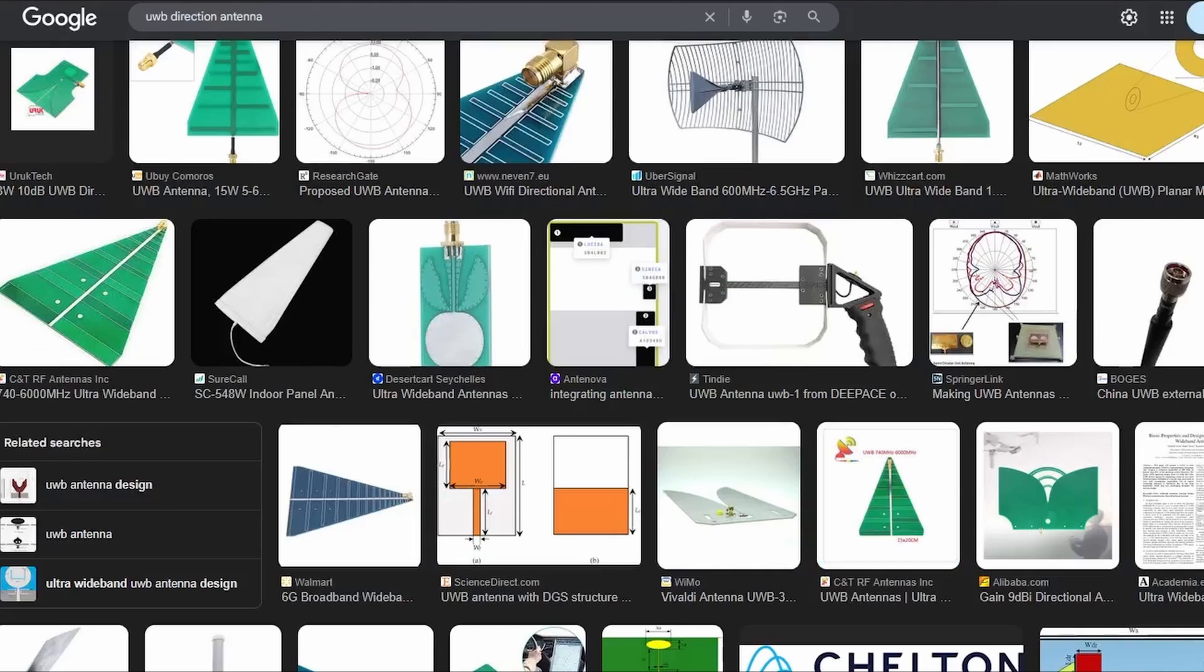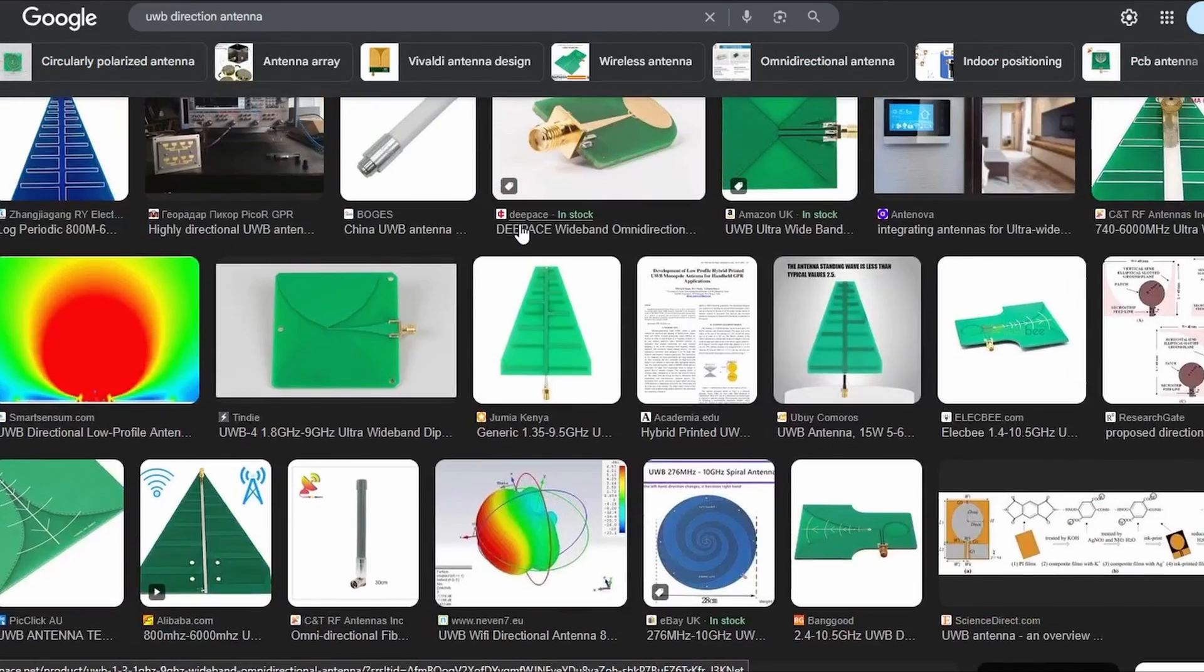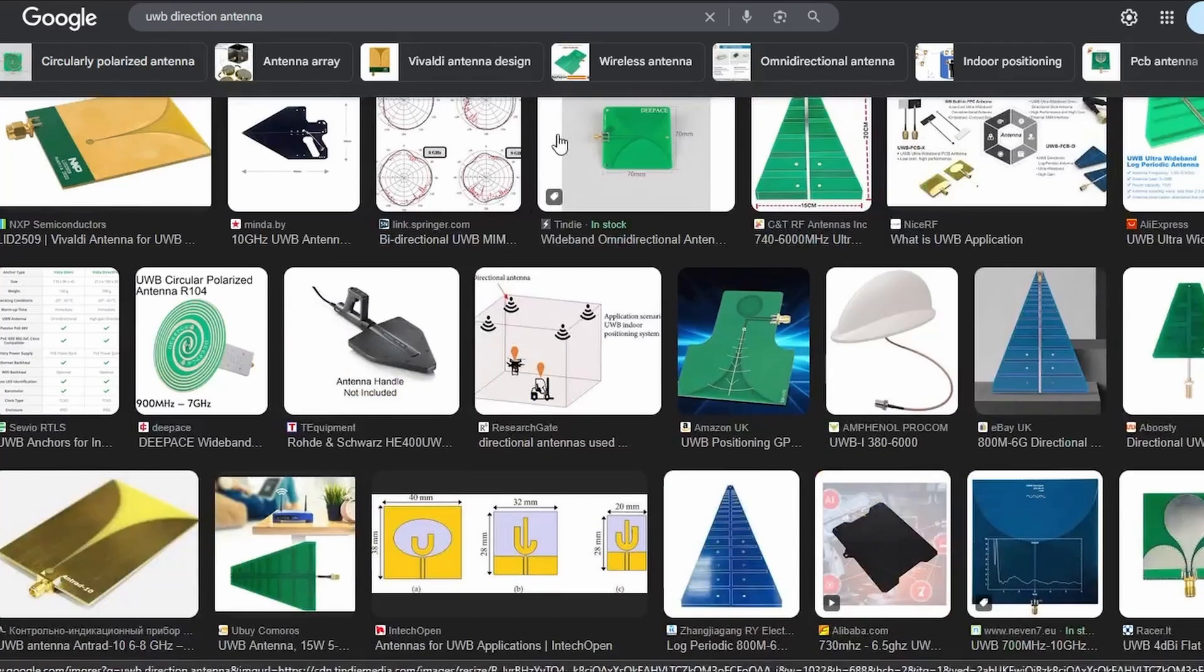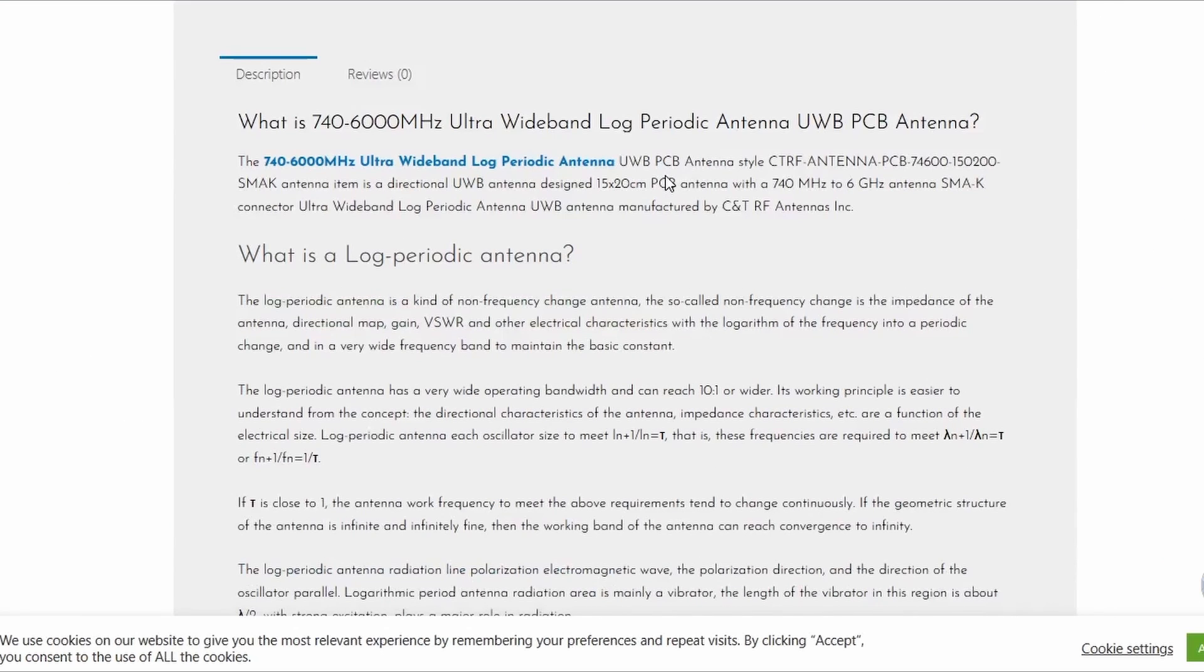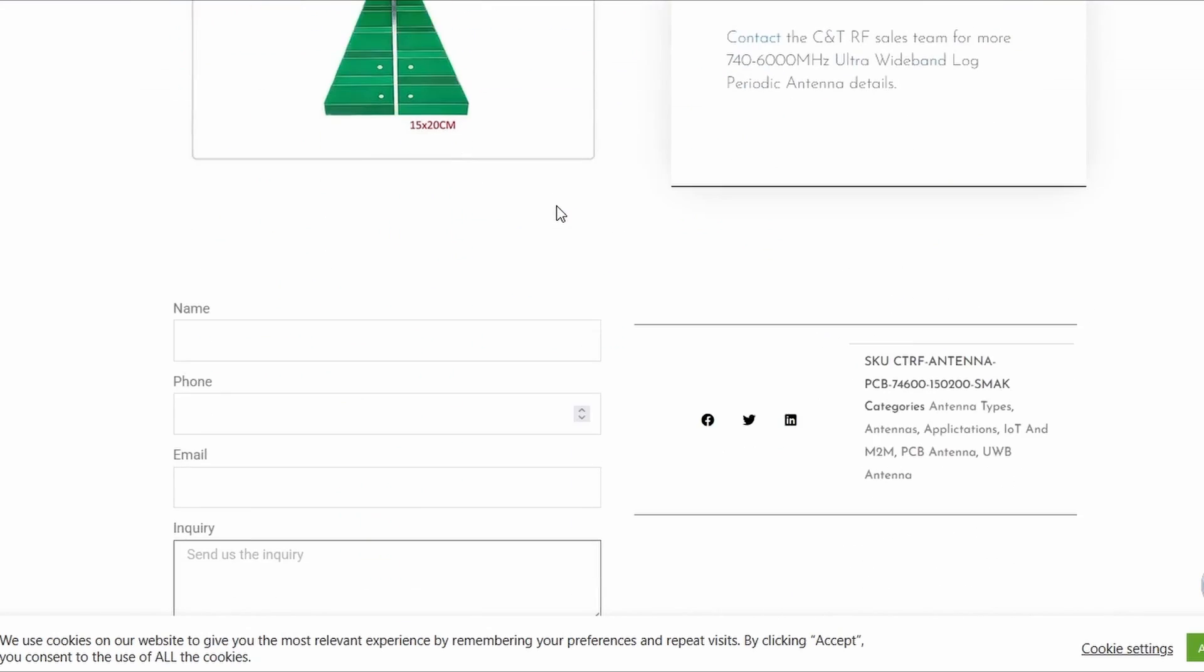You can find various suppliers of similar looking antennas, whether they're the same or not, I'm not so sure. And some of these give you a little bit more information about what they are, how they work. So this one here is not exactly the same, but as you can see from the picture, it looks very similar.